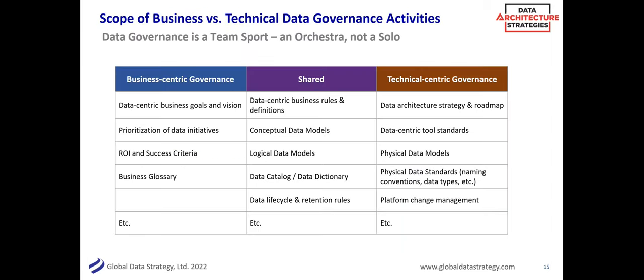There are activities that live on the business side of data governance, some on the technical side, and some in the shared middle. Pure business: what are our data-centric business goals, our priorities, what does good look like, what's our success criteria? Business glossary — what are our business terms and acronyms? These should be owned by the business, though some of the best ideas come from people who know the data or the systems. But ownership of business goals and priorities should sit with the business.